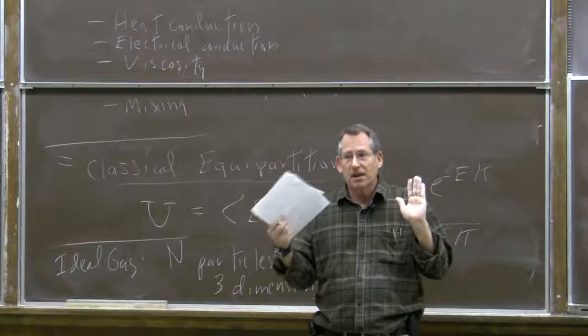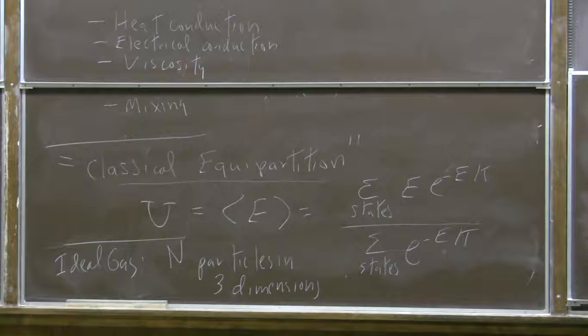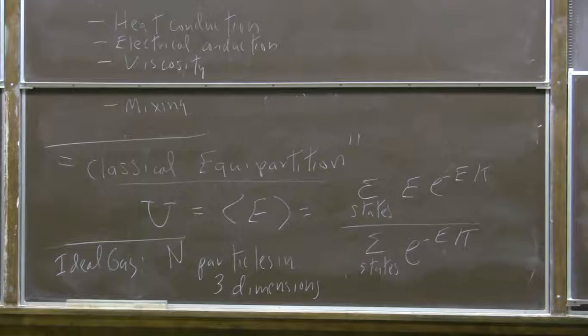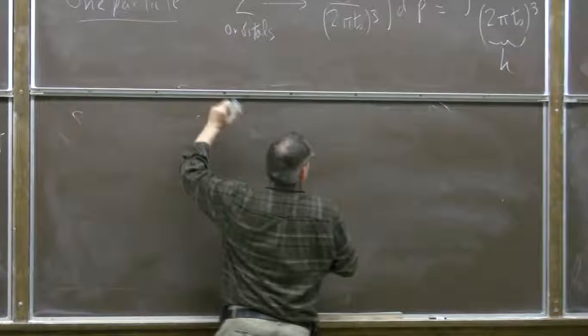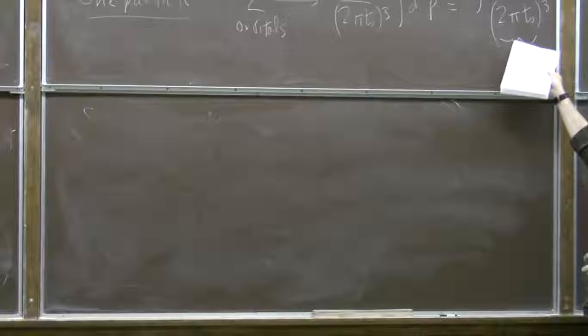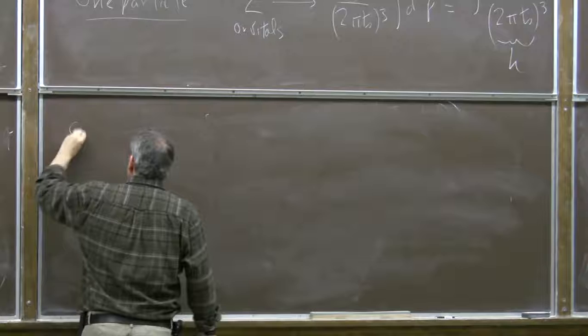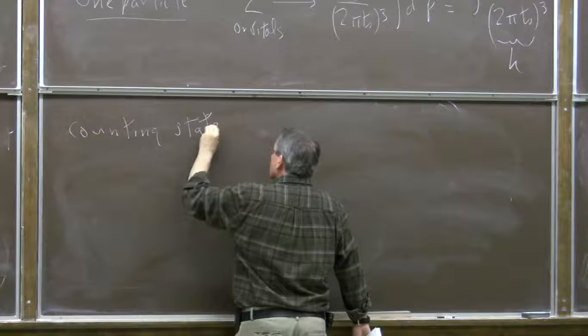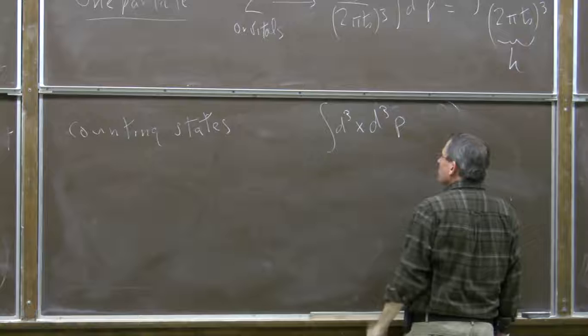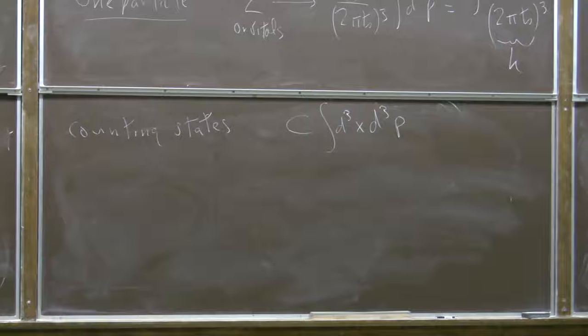For classical statistical mechanics, Maxwell and Boltzmann didn't know anything about h-bar. All we need to know is that summing over states is the same as integrating over the six-dimensional phase space for each particle times some constant, and that constant drops out of the things we compute. So to a classical physicist, counting states means integrating over position and momentum for each particle, up to some normalization constant.